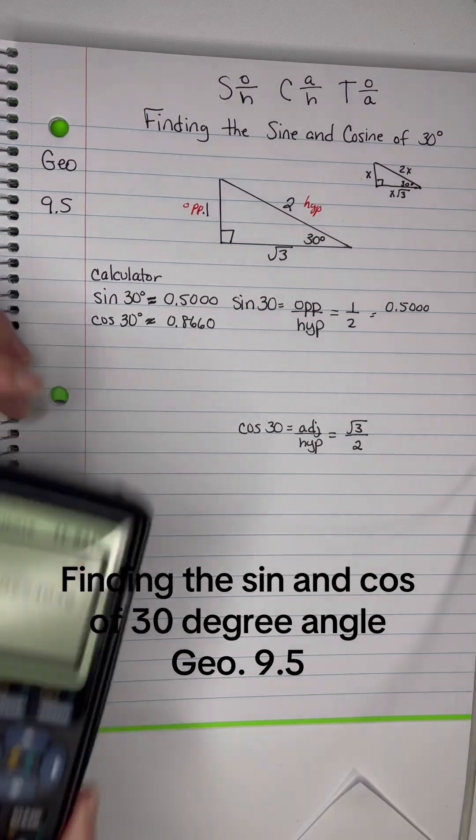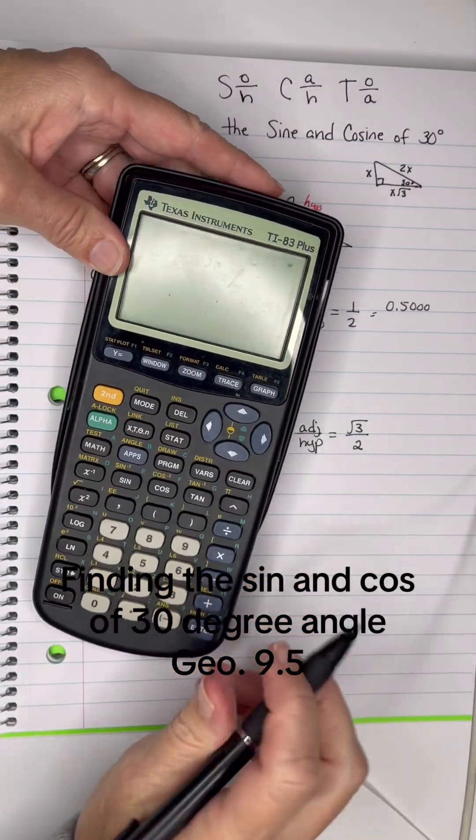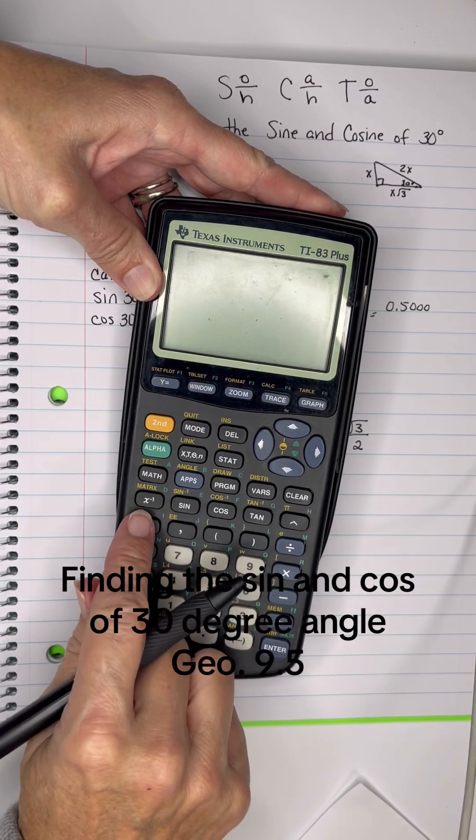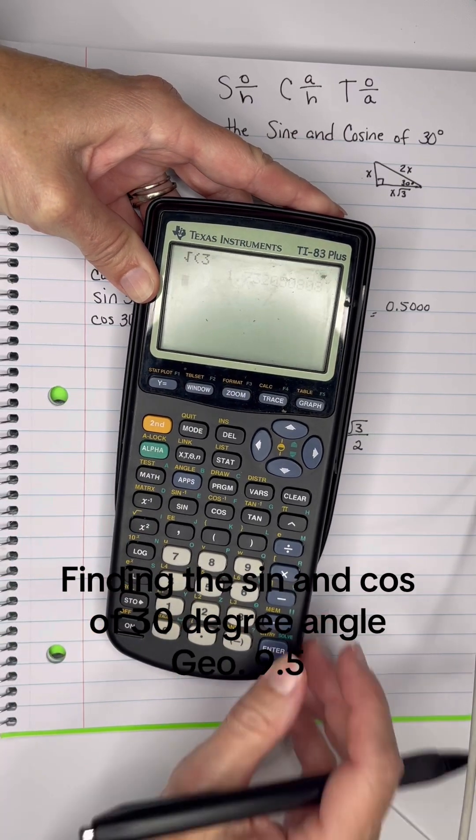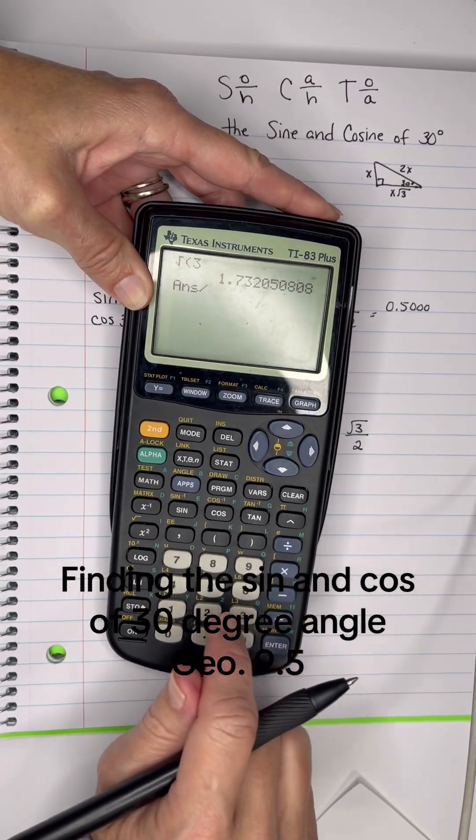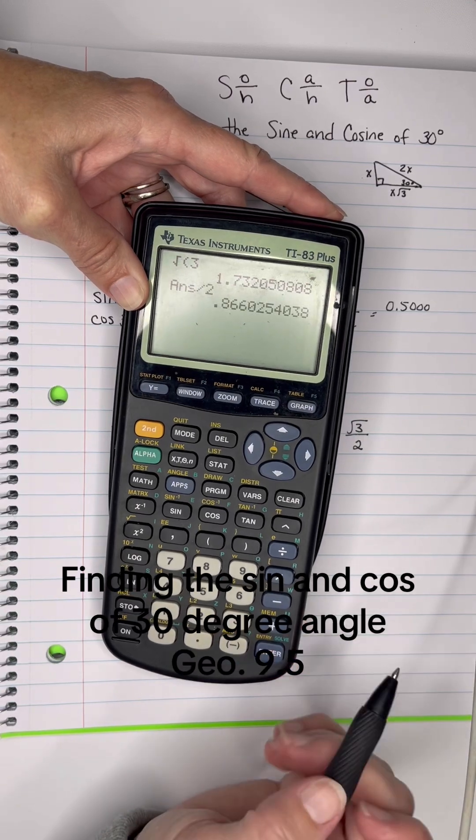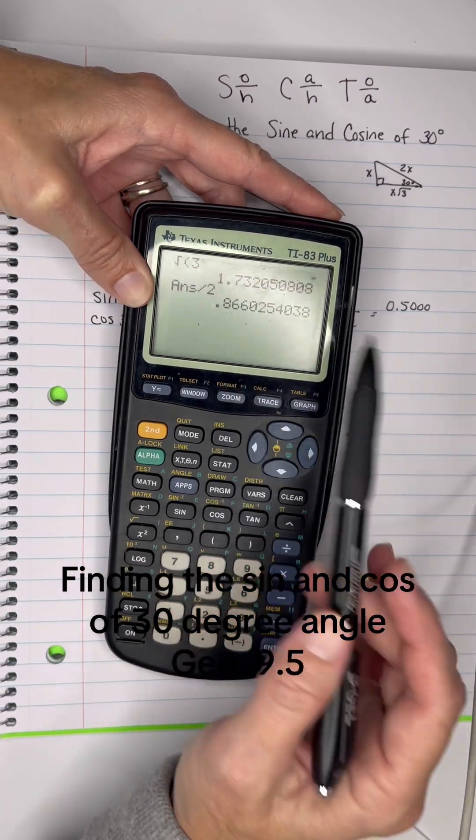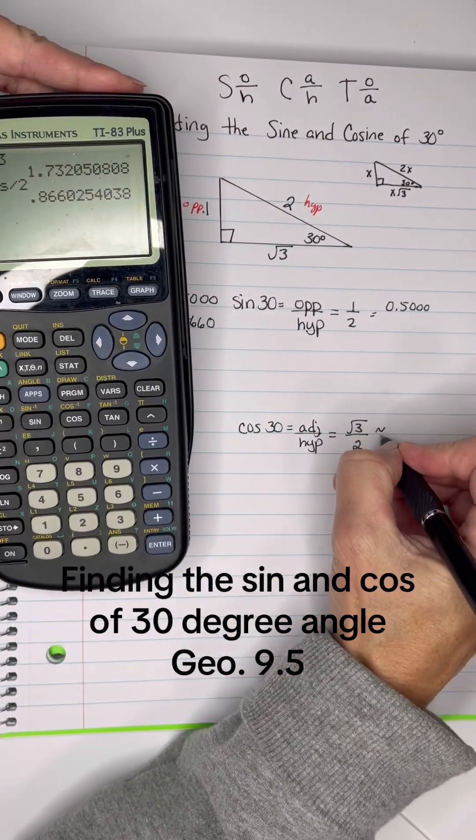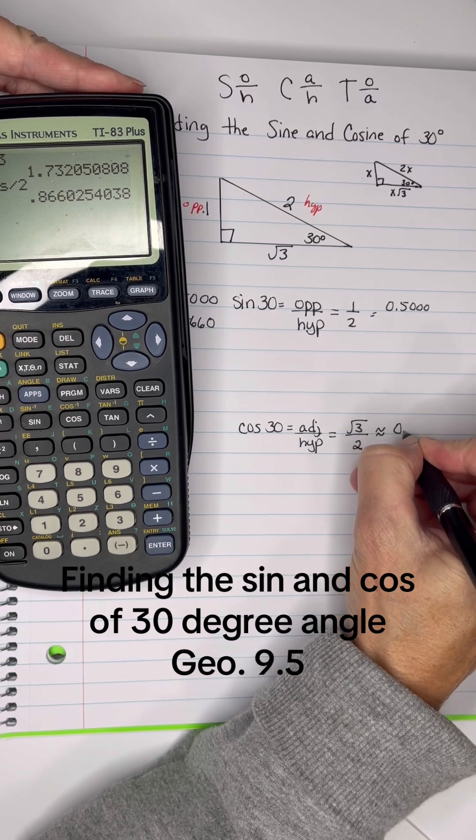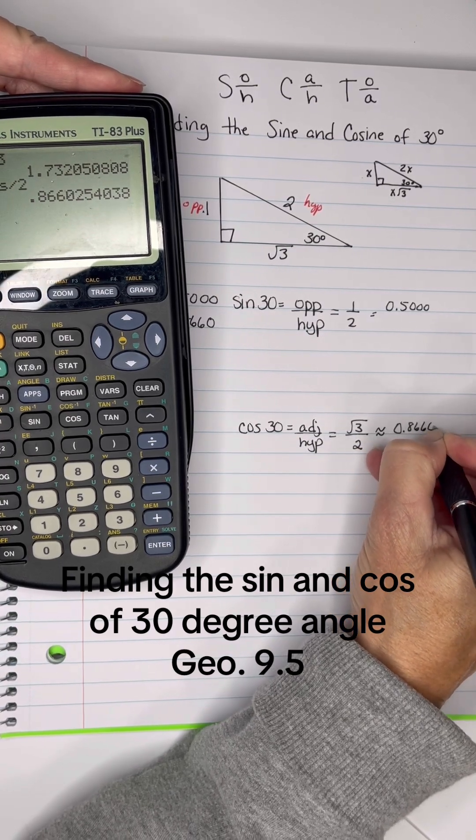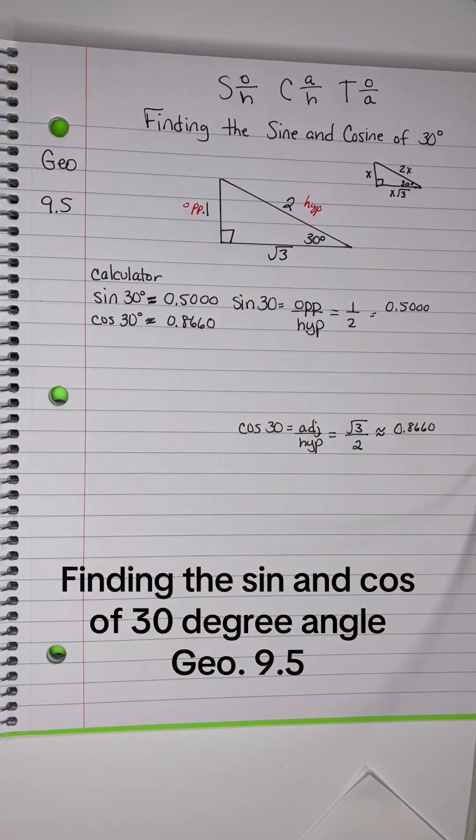So, let's go to the calculator and take the square root of 3 and hit equal, then divide by 2, 0.8660, so that is approximately 0.8660. That would be right. I'll see you next time.